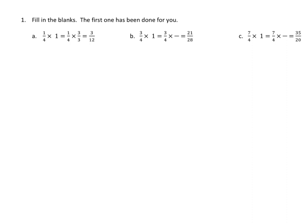We have one example here. We have 1 fourth times 1, and that's the same as 1 fourth. We rename 1 as 3 thirds, and we multiply both the numerator and the denominator by the 3. So 1 times 3 is 3, 4 times 3 is 12, and our equivalent fraction is 3 twelfths.